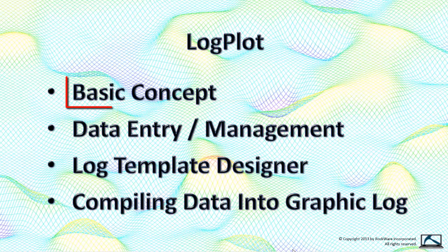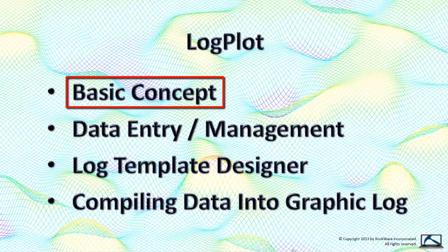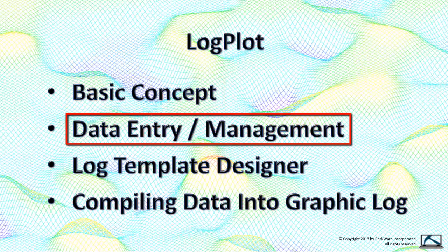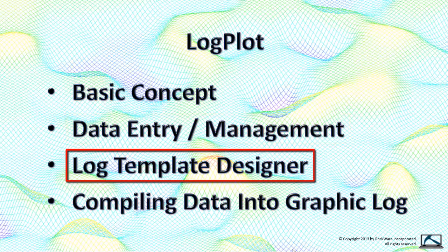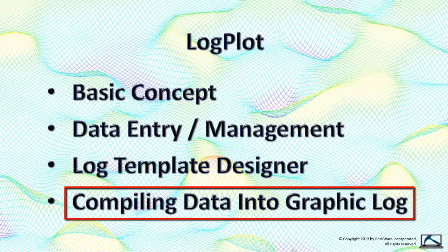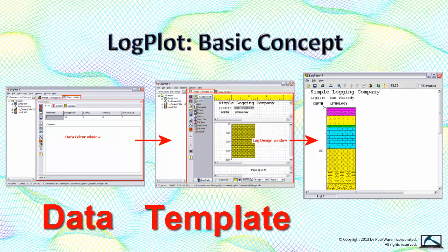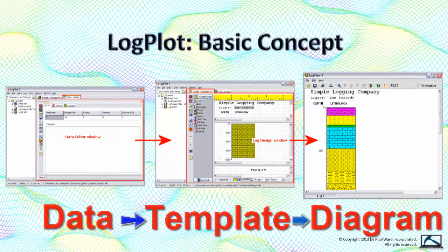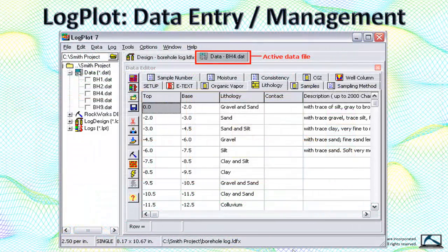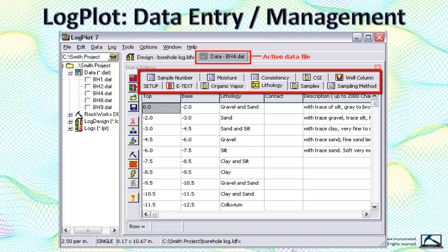Let's start with Logplot. I'll describe the basic concept of how Logplot works, then show how data is manually entered. Next, I'll show how templates or layouts are designed within Logplot, and I'll talk about how Logplot compiles the data into a graphic strip log. The basic idea is that it takes data for a given borehole and uses a template to determine how this data should be displayed. The data entry screen consists of a series of tables for each data set such as lithology, stratigraphy, fracture orientations, geotechnical measurements, geochemical values, etc.